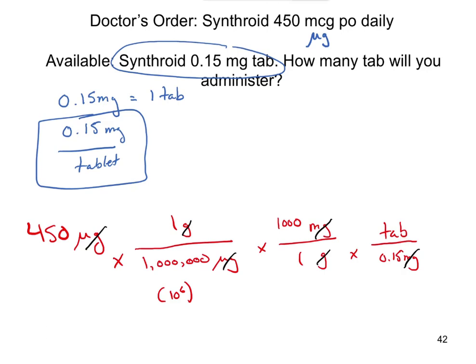Doing the math: 450 divided by 1,000,000 times 1,000 divided by 0.15 — that adds up to 3 tablets. So you would tell the patient to take three of these tablets per day.